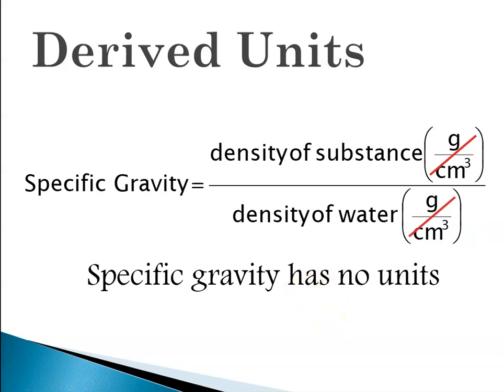When might you use specific gravity? So let's say you were trying to figure out if a particular object would float or sink in water. If its density is greater than that of water it would have a specific gravity greater than one. If its density was less than water it would have a specific gravity less than one. And that would be a way for you to determine whether something would sink, density greater than water, or whether it would float, density less than water.